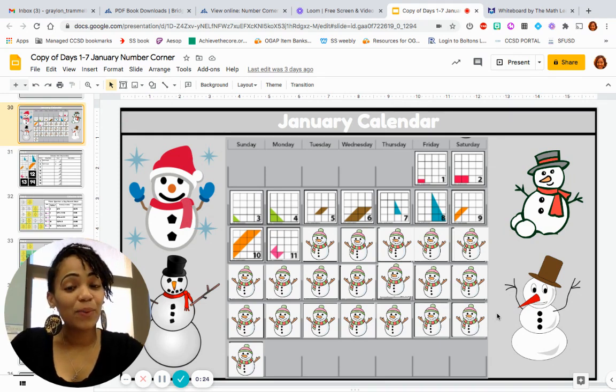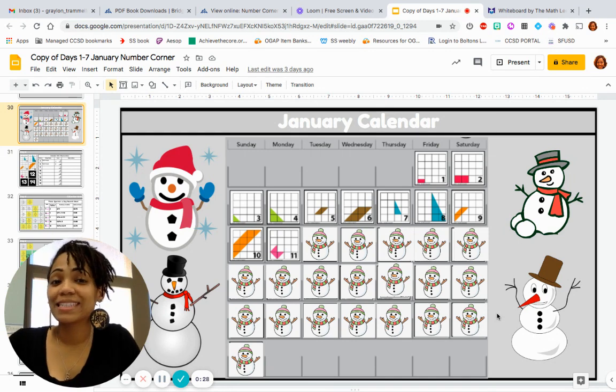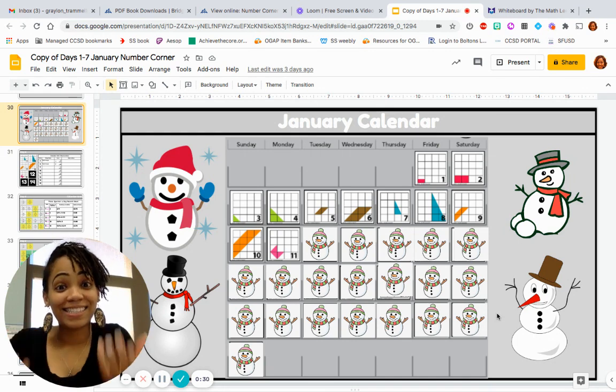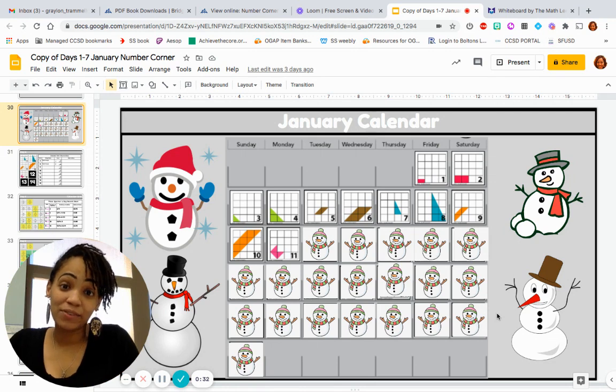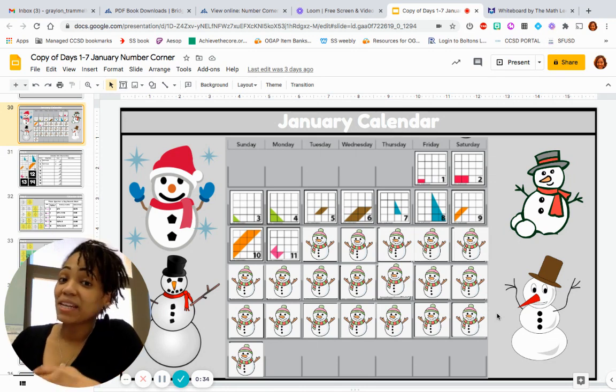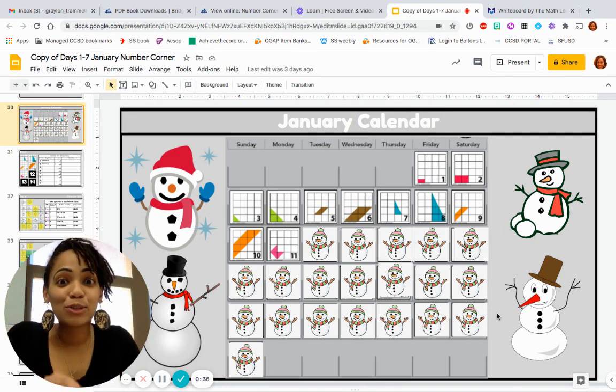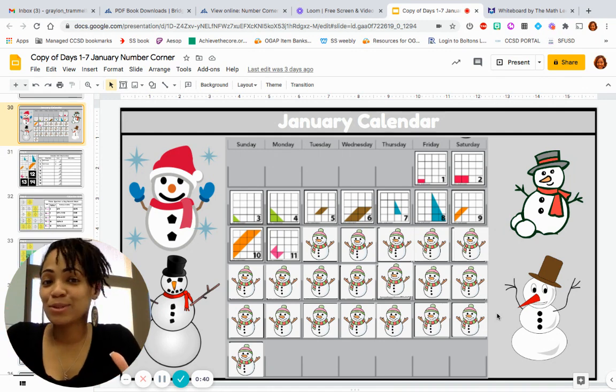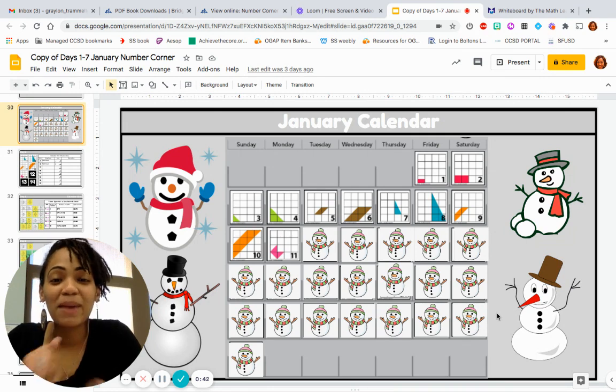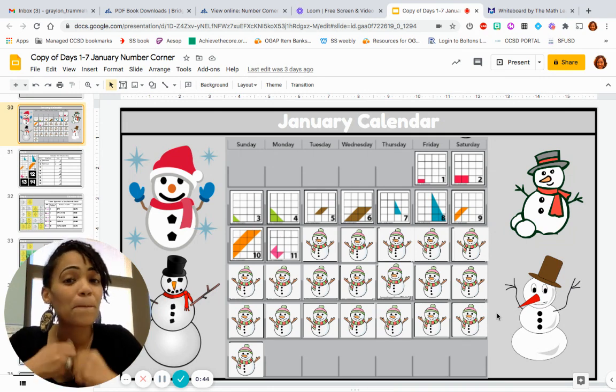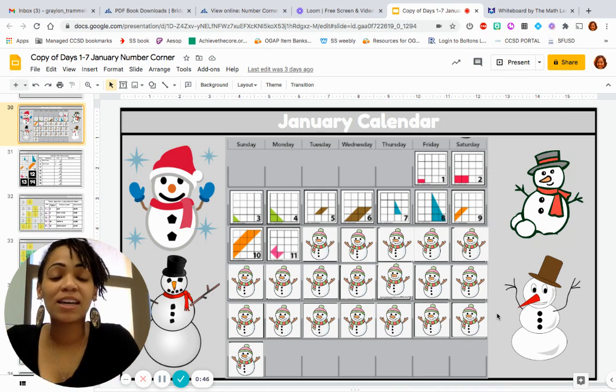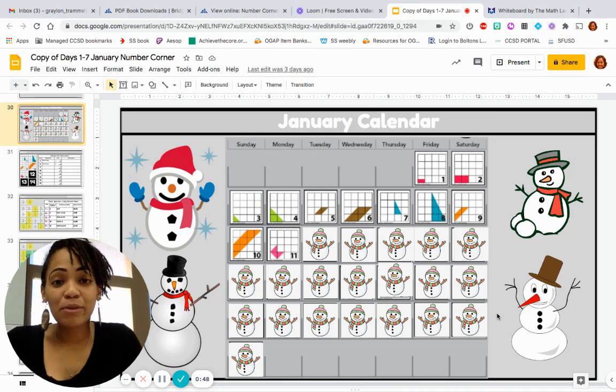Hey friends, welcome back to another week of January's Number Corner. Today is day 6 of January for Number Corner purposes, but it is January the 11th, 2021. It's still kind of weird for me to say 2021, but I'm so excited that we made it to another year and we're hopeful for bigger and better things to happen this year.